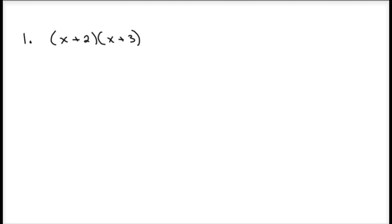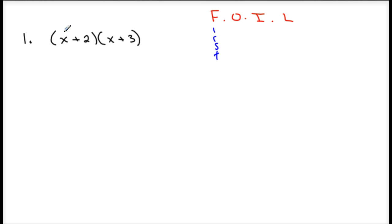A common acronym we're going to see here is the word FOIL — F-O-I-L. What I'm going to do is FOIL: the First. I'm going to multiply the first two terms — the first term in this quantity and the first term in this quantity. So x times x gives me x squared.